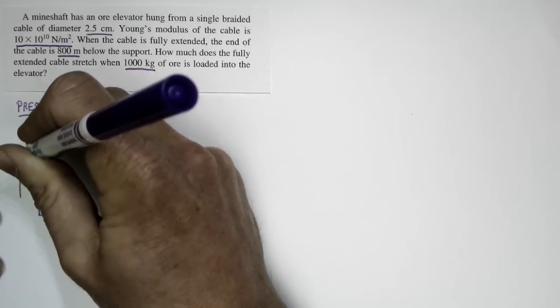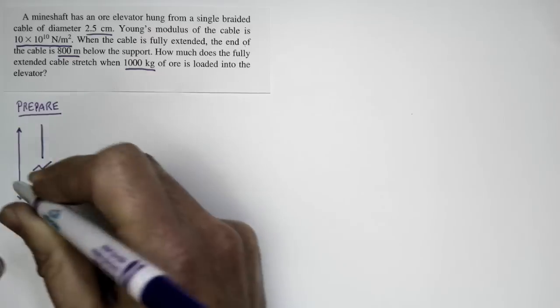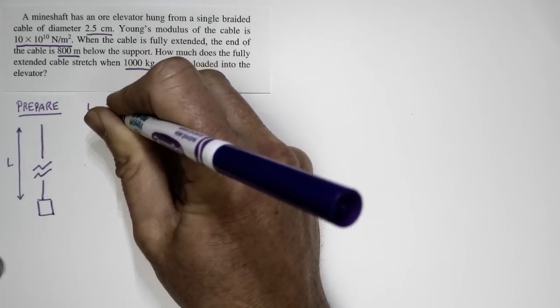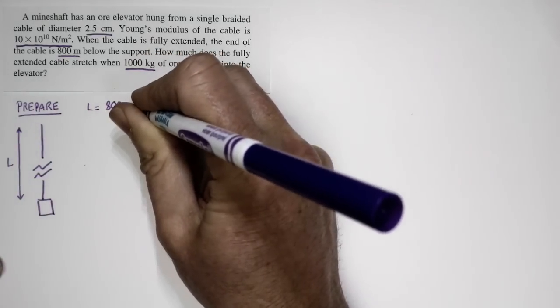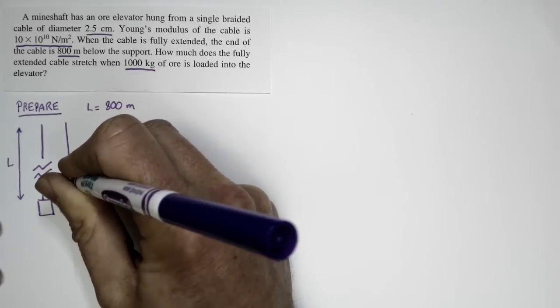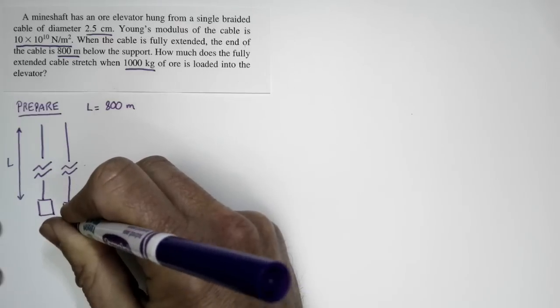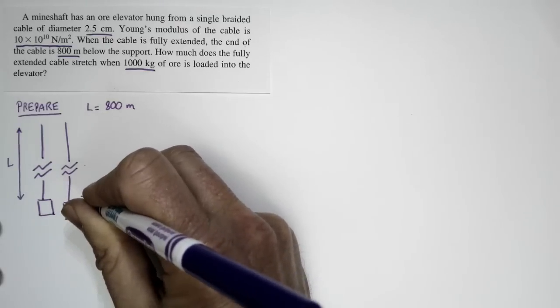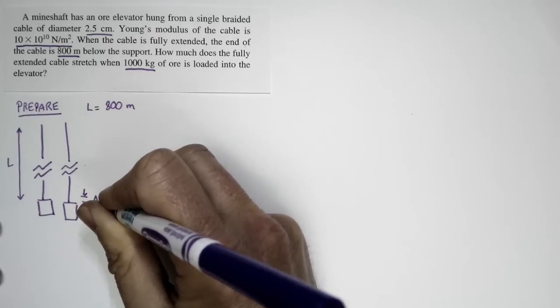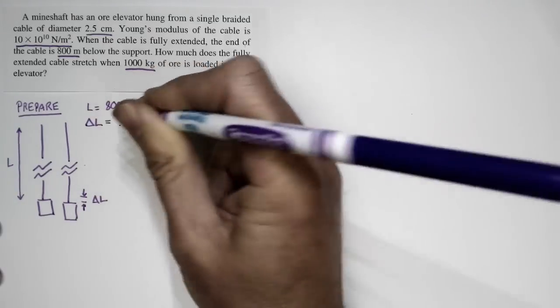Initially, it starts out with a length of 800 meters. Then, we add an extra 1,000 kilograms of mass to the elevator, and it stretches a small amount. The amount that it stretches, we're going to call delta L, and delta L is something that we're trying to find in this problem.